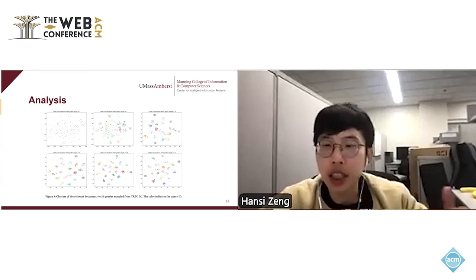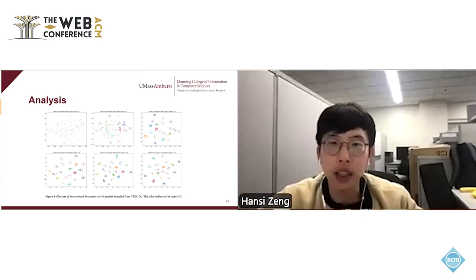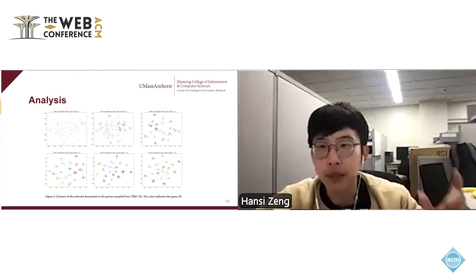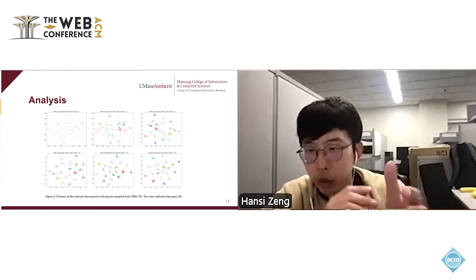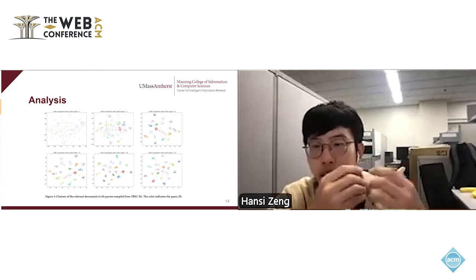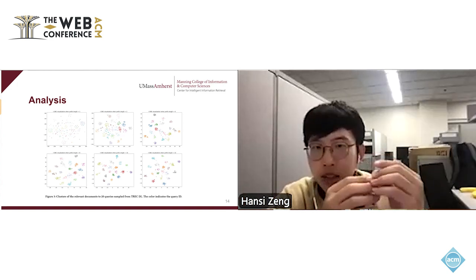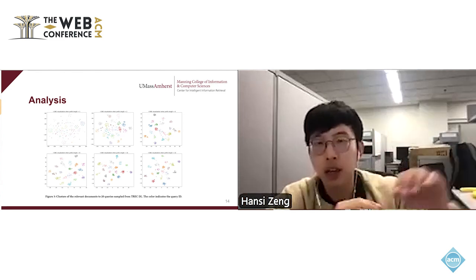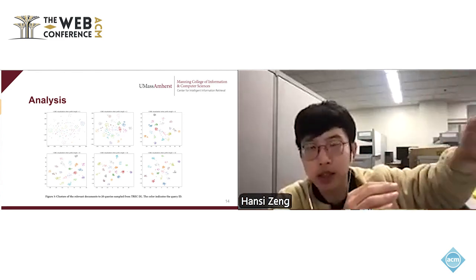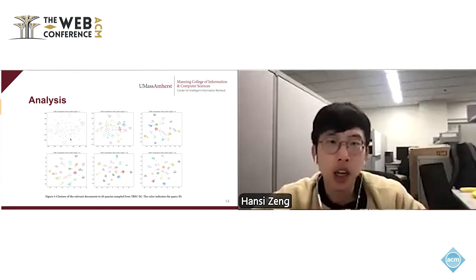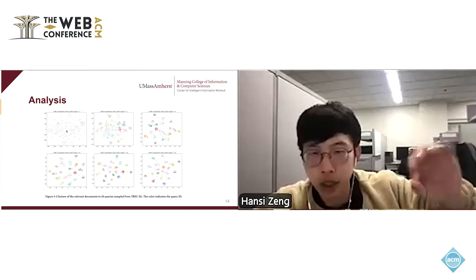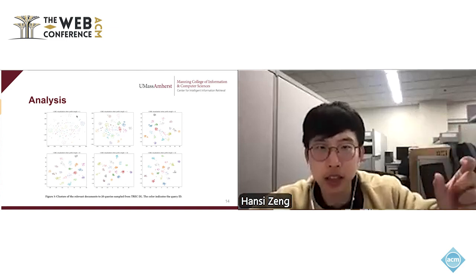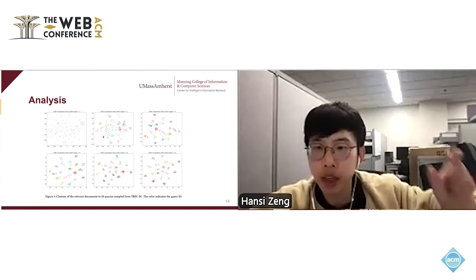We also qualitatively evaluate the quality of document IDs with different prefix lengths. In our setting, each document ID contains 30 tokens. We sample 20 queries from the TREC DL dataset. Documents relevant to the same query are assigned the same color. Each point in the figure represents a document, and we visualize document IDs with prefix lengths of 1, 2, 4, 8, 16, and 30.